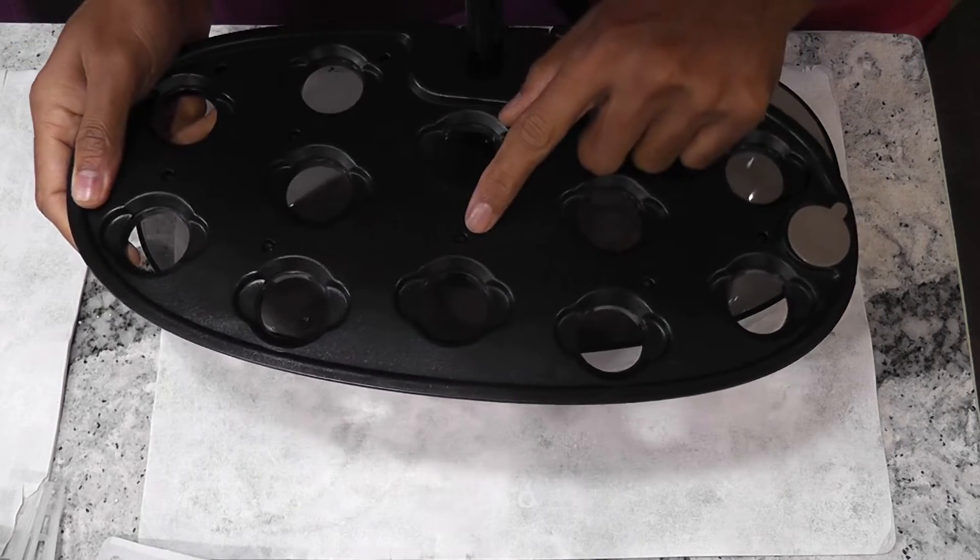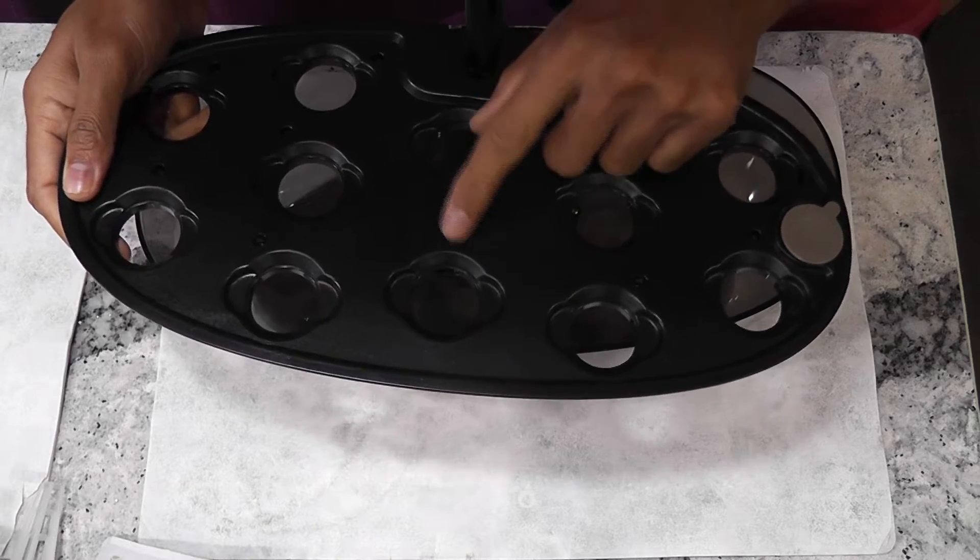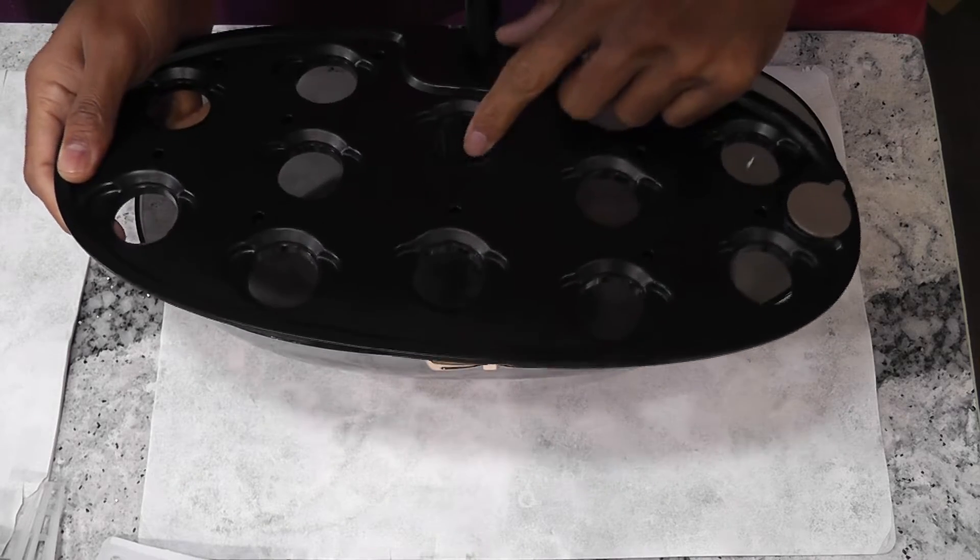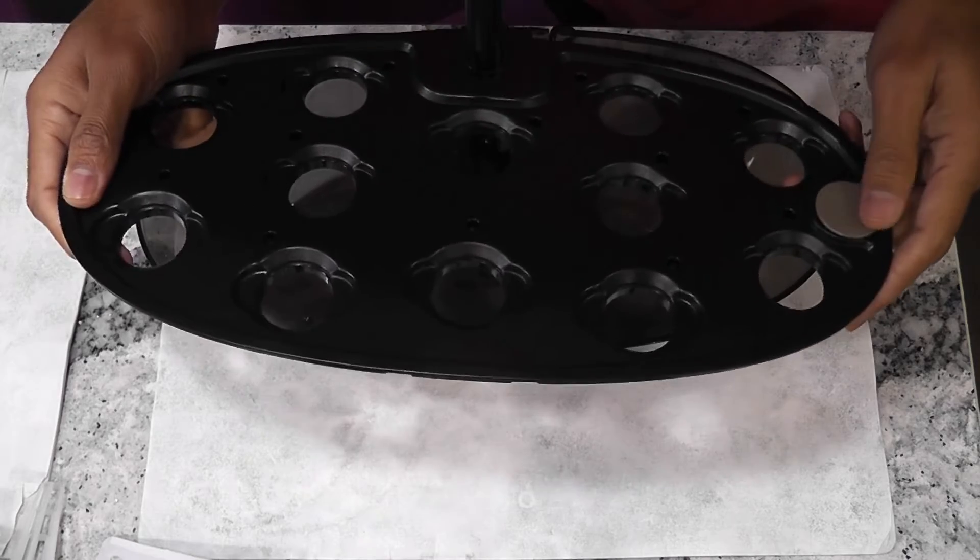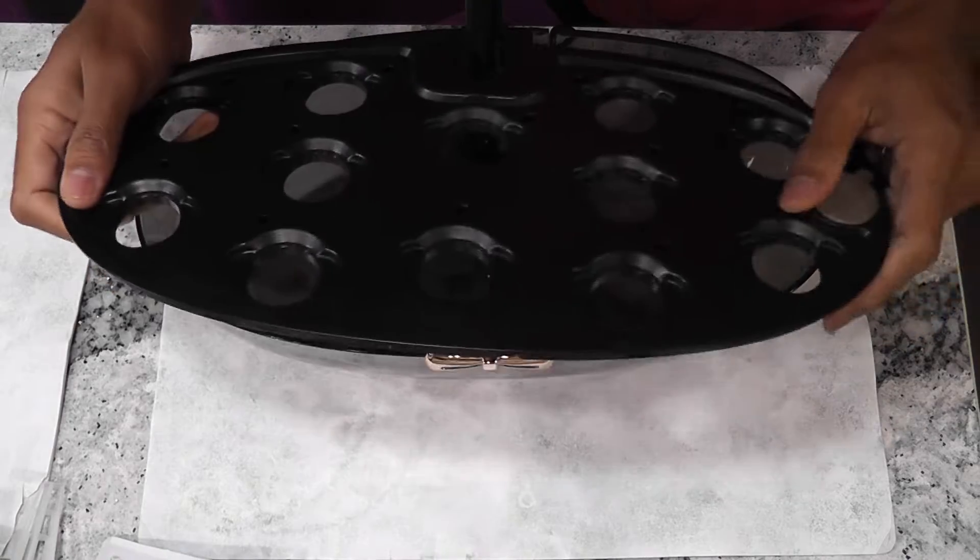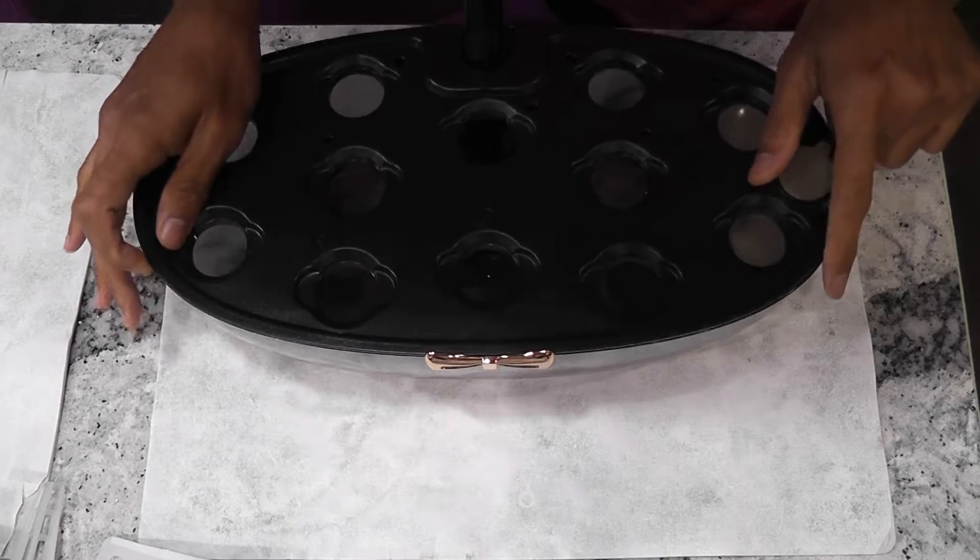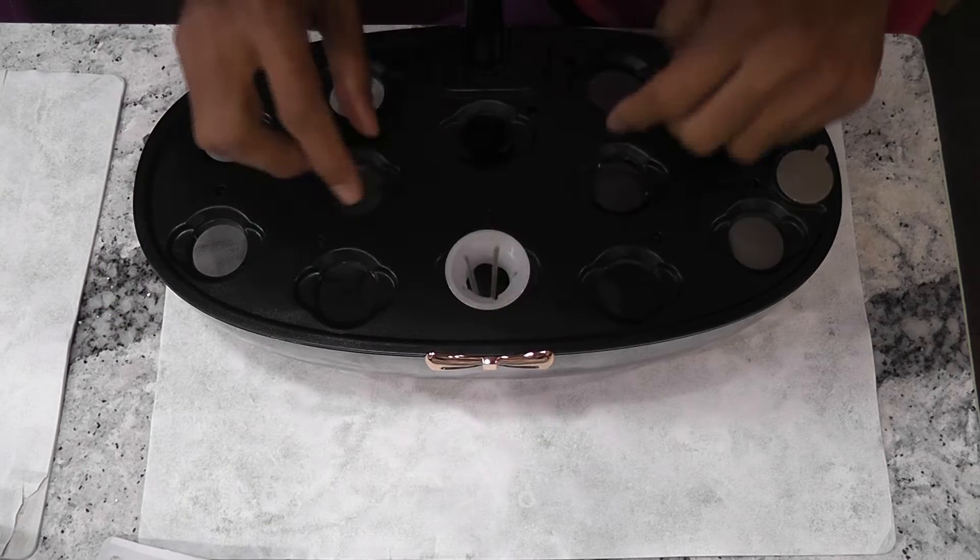These holes are used to stick the plant tags or the support sticks. I am not a big fan of these holes but sometimes we need support sticks so they may be useful for some cases. Now let's place the plant basket.